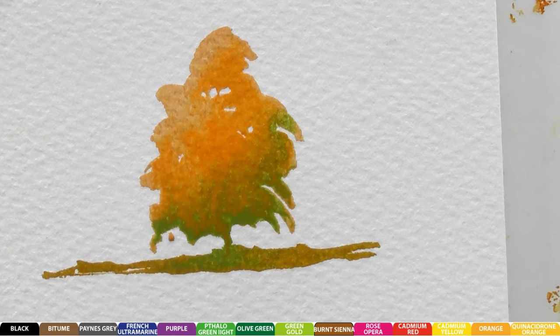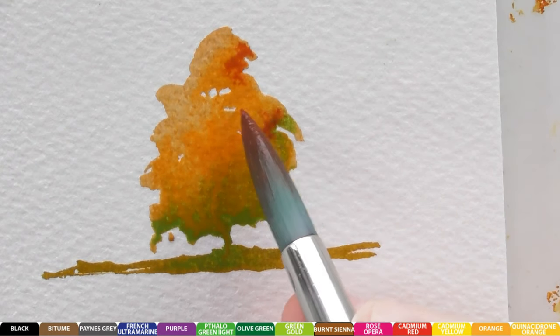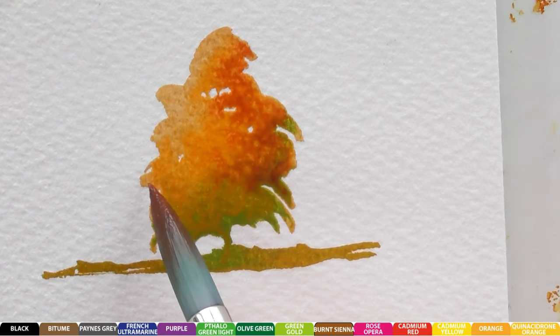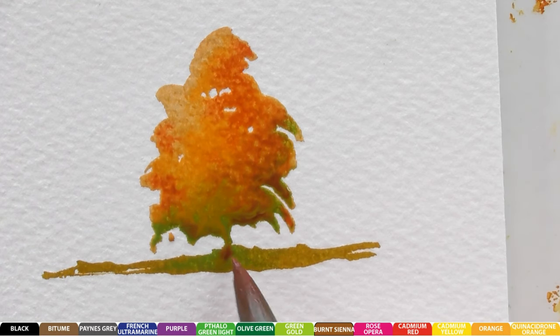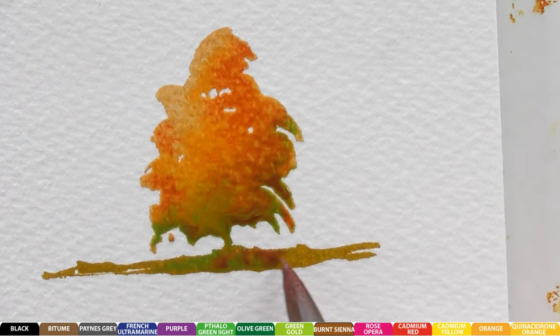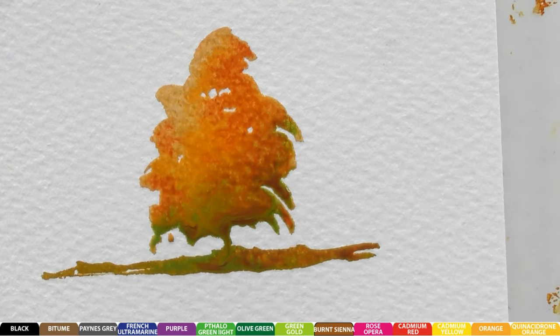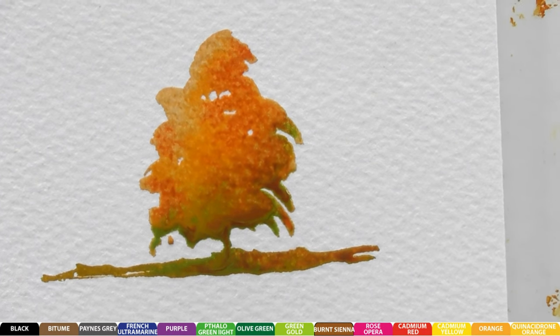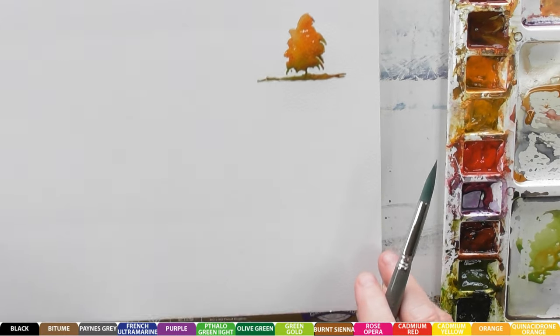So I'm just going to get a little bit of quinacridone burnt orange and just under these little tips, just under these little areas here. Now it just allows that tree to basically paint itself. So that's one way of doing it. Now let's zoom out. I'm just going to move a little bit further in there.